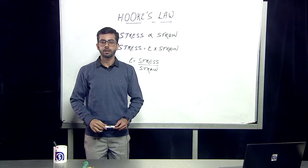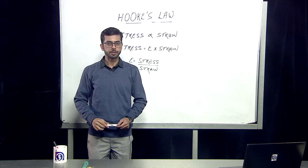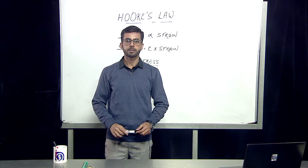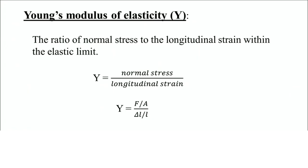There are certain types of modulus of elasticity dependent on the dimension of the body. The first type is Young's modulus of elasticity, represented by capital Y. From the slide, capital Y is given by the ratio of normal stress to longitudinal strain. Therefore, we consider a one-dimensional object — a thin wire, which has length and negligible breadth.